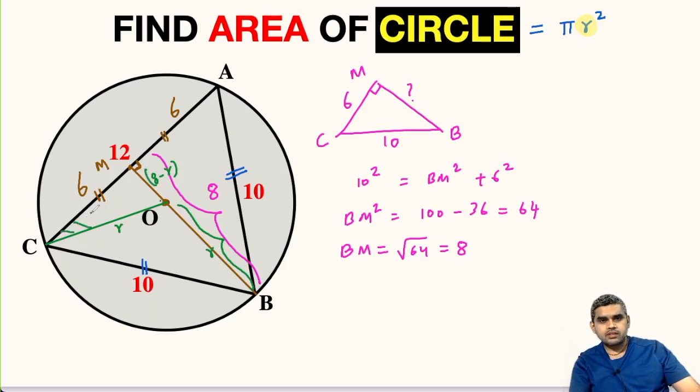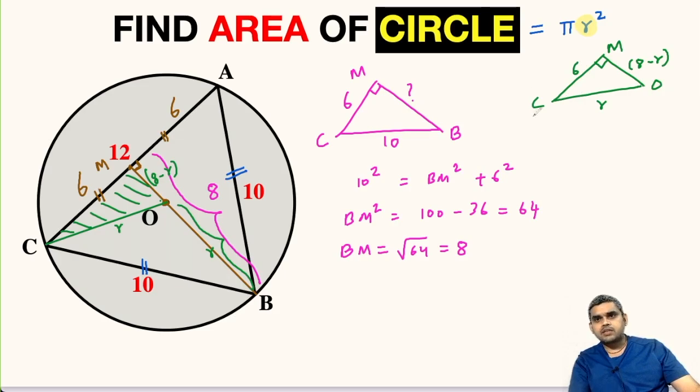Now let us focus on this triangle OMC. Let me draw it outside. This is 90 degrees, point M, O, and this point is C. This length is r, this is 8 - r, and this is 6. We will apply Pythagorean theorem in this triangle also.